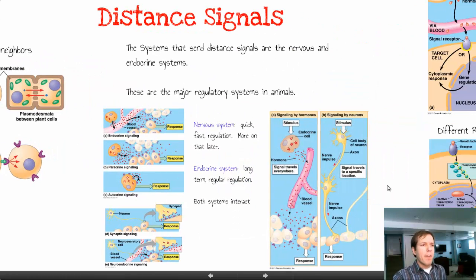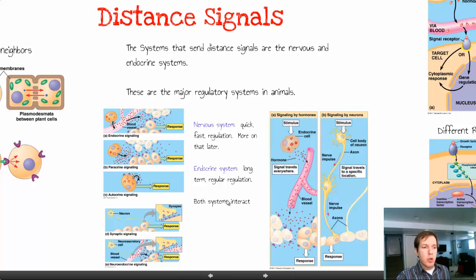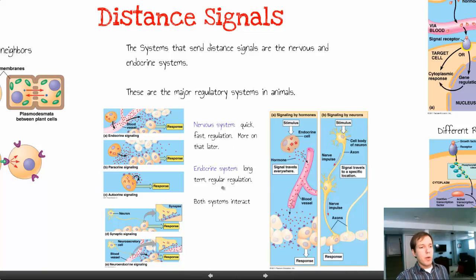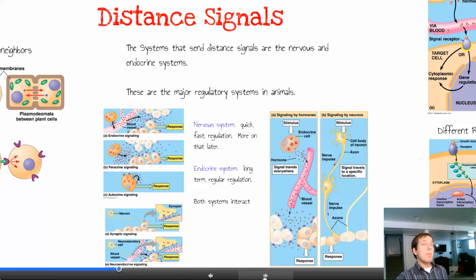Other signals need to be sent far distances — for example, your brain sending a signal to your liver, to a muscle, to a toe. In those cases you have two ways of doing it. The nervous system is usually fast, recognized immediately, and the response is immediate. The endocrine system is going to be long-term regular regulation — communication that is not necessarily instant but lasting for minutes, hours, or years.